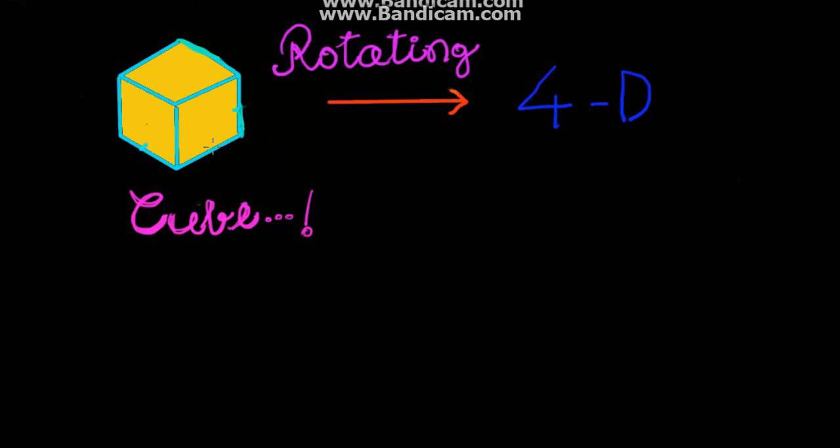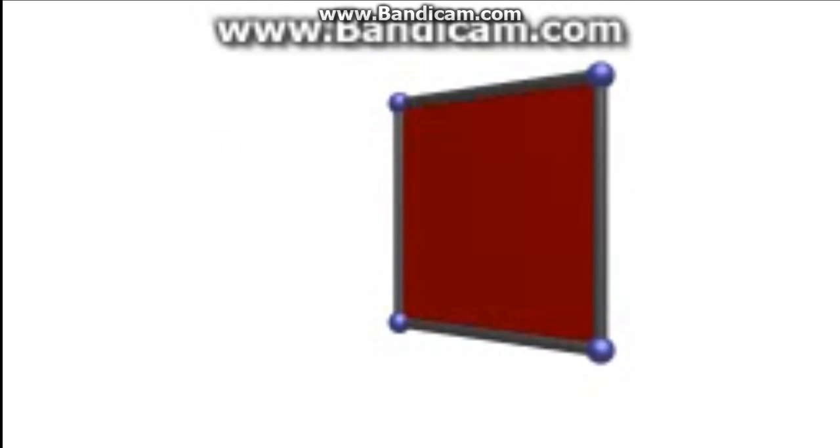We shall now use dimensional analogy to investigate the perspective projection of a 3D cube as it gets rotated through 4D. This will greatly help us understand projections of 4D objects later on. We will start by taking a look at a 2D square rotating in 3D. Imagine if a 2D being were looking at this animation.